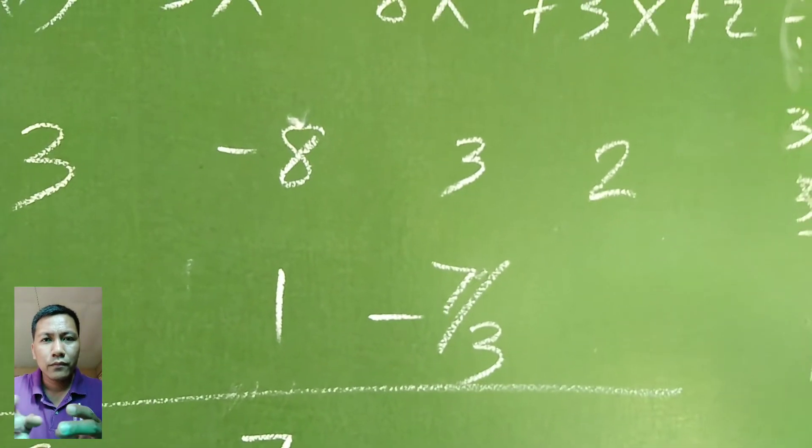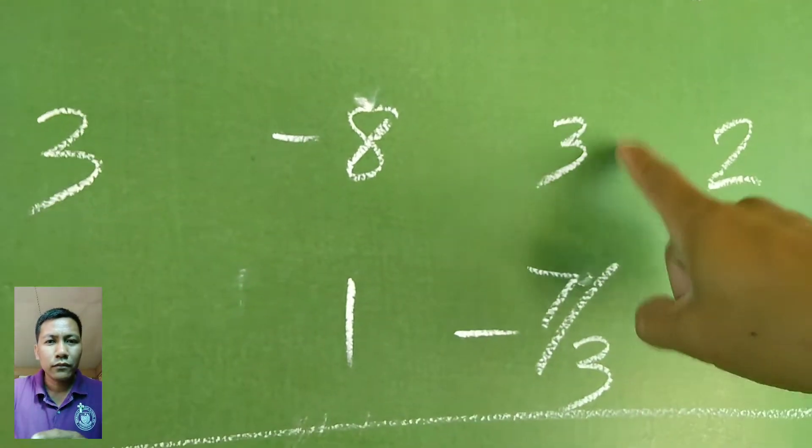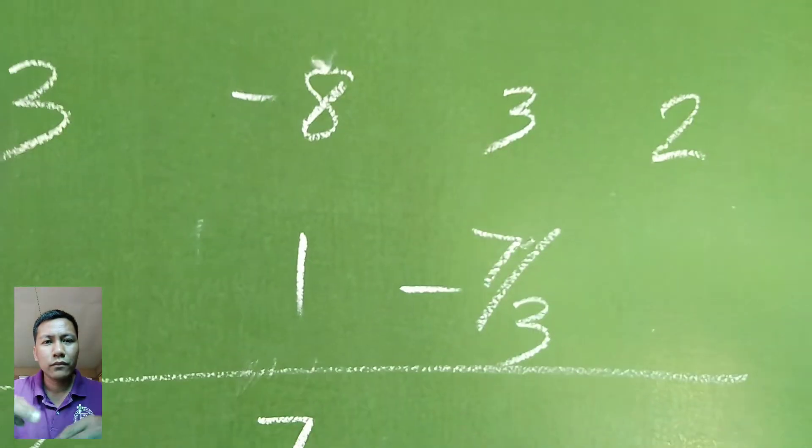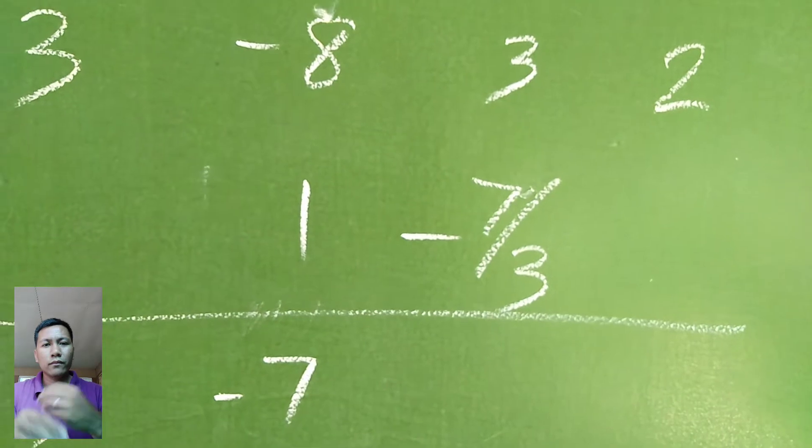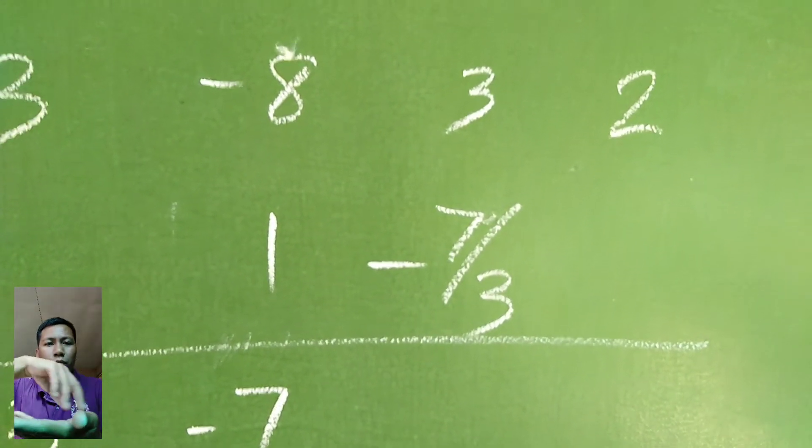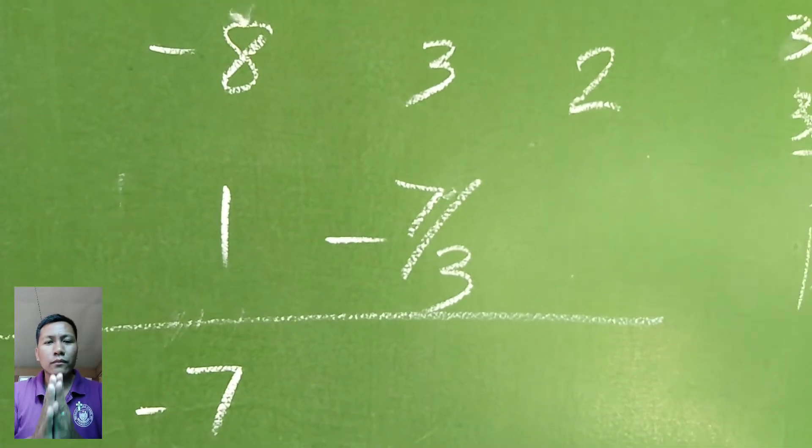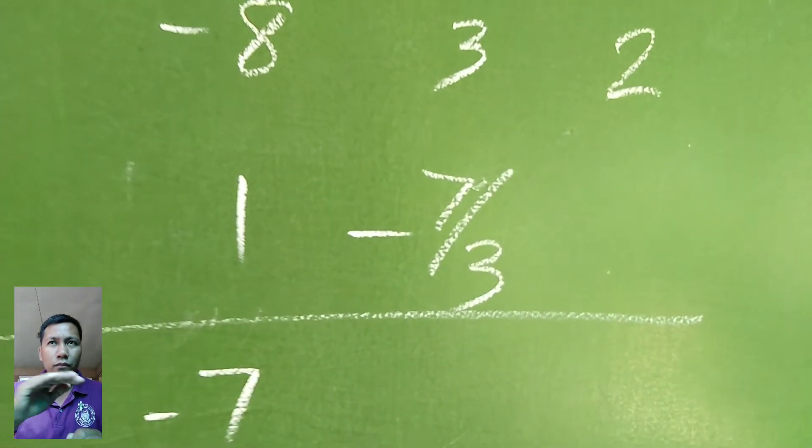Negative 8 plus 1 is negative 7. So this is negative 7 over 3. I make mistakes too, right? But good thing we checked beforehand. Next: 3 plus negative 7 over 3. So what's the answer? We have 2 third.